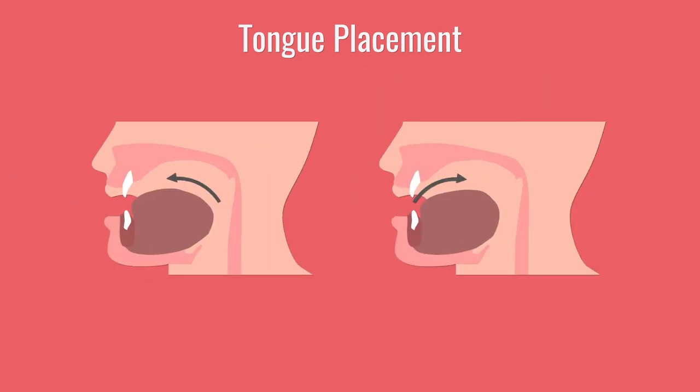It can also go forward and back. So compare E as in bet and A as in but. Your tongue goes forward for E and then it pulls back for A: bet, but.